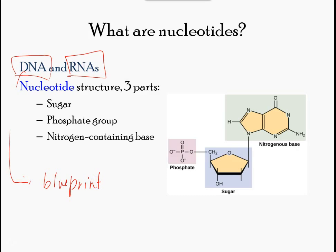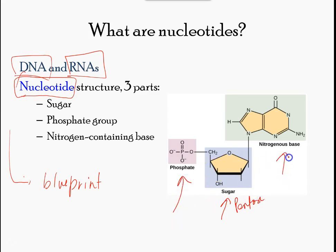DNA and RNA are made up of monomers known as nucleotides. The nucleotides combine with each other to form a polynucleotide — DNA or RNA. Each nucleotide is made up of three components: a nitrogenous base, a pentose (5-carbon) sugar, and a phosphate group. Each nitrogenous base in a nucleotide is attached to a sugar molecule, which is attached to a phosphate group.